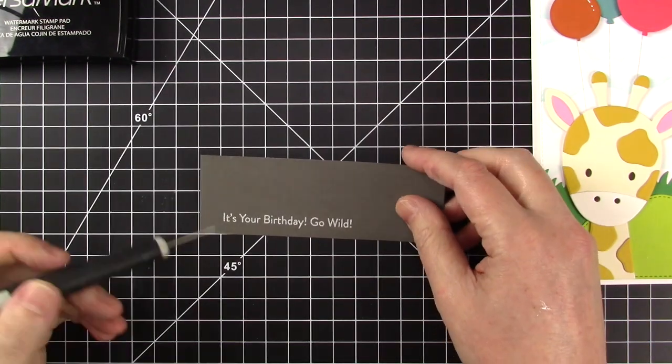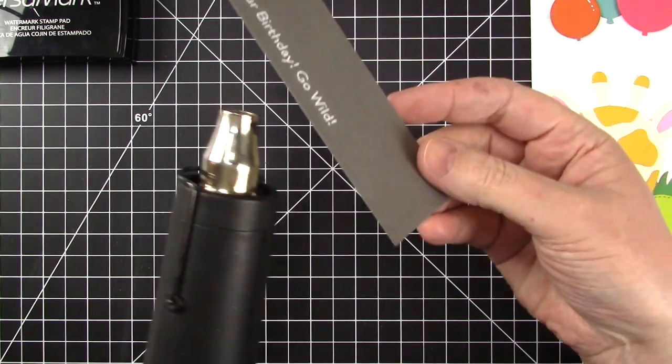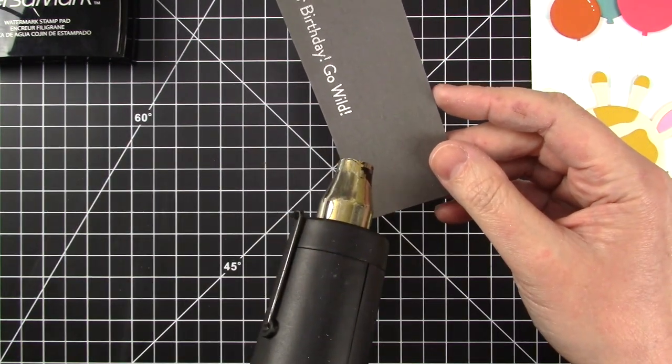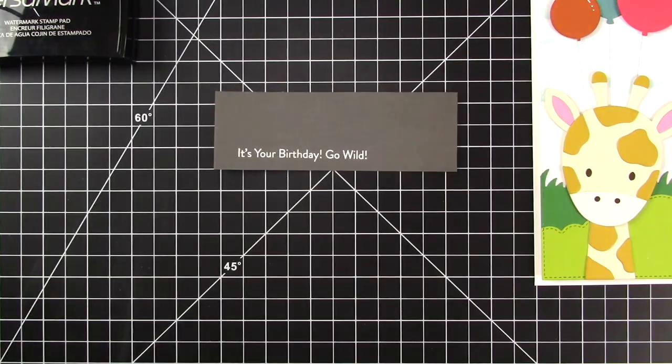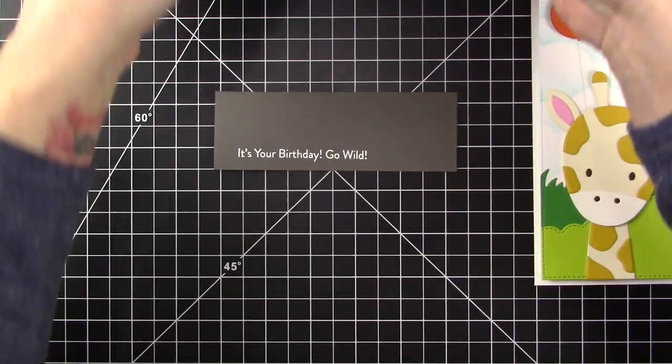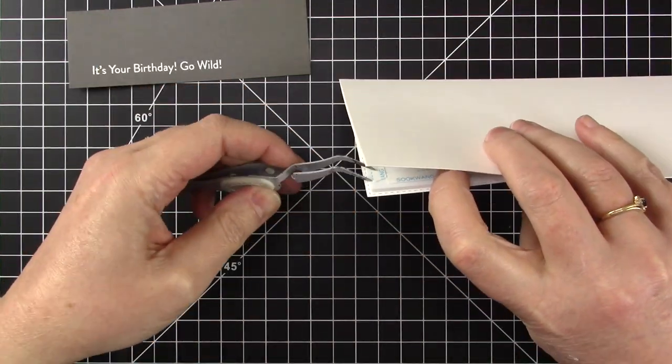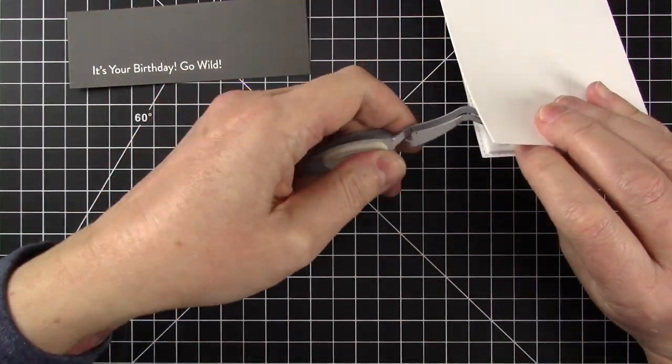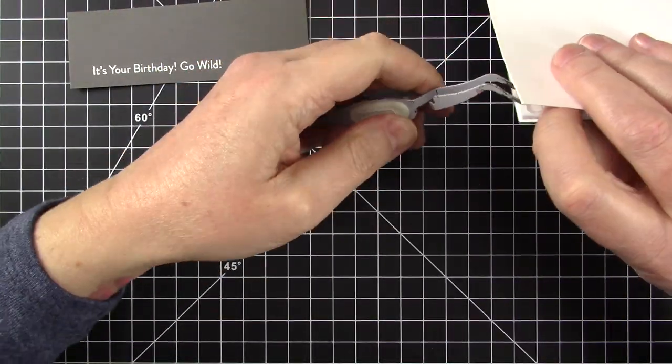Now moving on to the sentiment. I picked a sentiment from Giraffe Greetings, a birthday sentiment. I'm heat embossing it onto the Eiffel Tower cardstock and I'm going to let it sit for a second just to let that embossing powder cool down and I'm going to take the adhesive backing off of the rest of the adhesive strips that are on the foam.